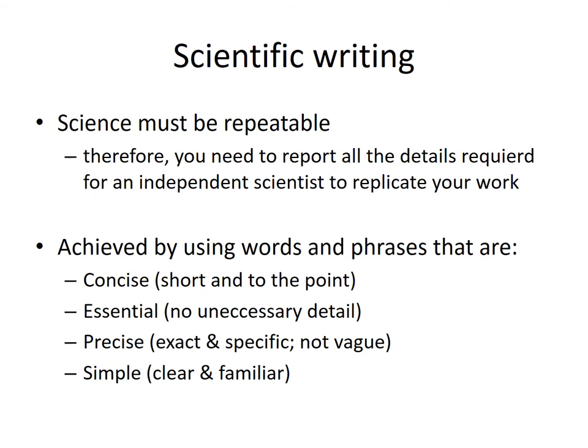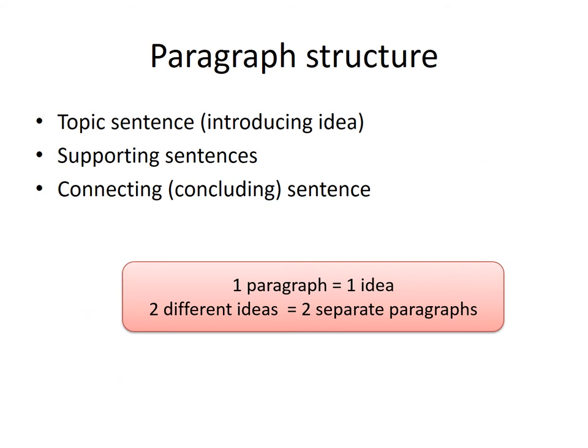We achieve this by using words and phrases that are concise — straight to the point. We use only words and phrases that are essential, so we don't provide unnecessary detail. We need to be precise in our writing and choice of words. We can't use vague terms — we can't say we sampled in summer if we sampled on the 15th of January. And we use words and phrases that are simple. Even though scientific writing generally happens in English and maybe another four or five languages, the people who read those articles come from every language group in the world. So we don't want to show off our grasp of English; we want to show off our science. To do that, we keep our writing very clear and use familiar words and phrases that can't be misunderstood.